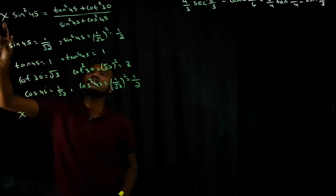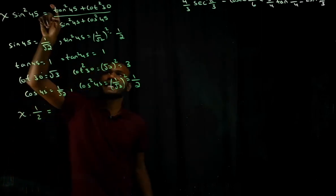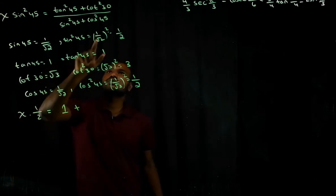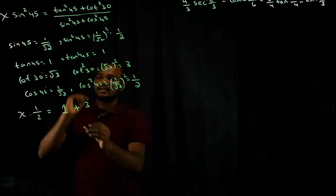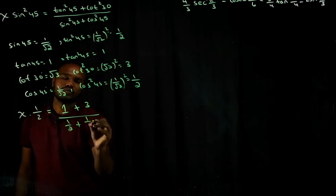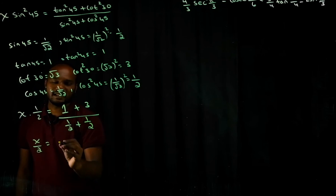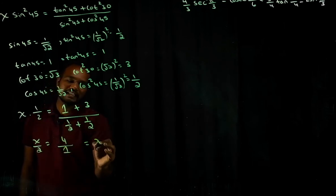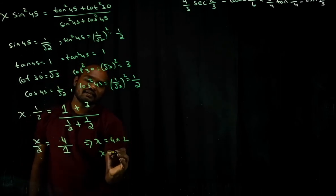Now substituting into the formula: x times (1/2) equals (1 + 3) divided by (1/2 + 1/2). So x/2 = 4/1 = 4, therefore x = 4 × 2 = 8.